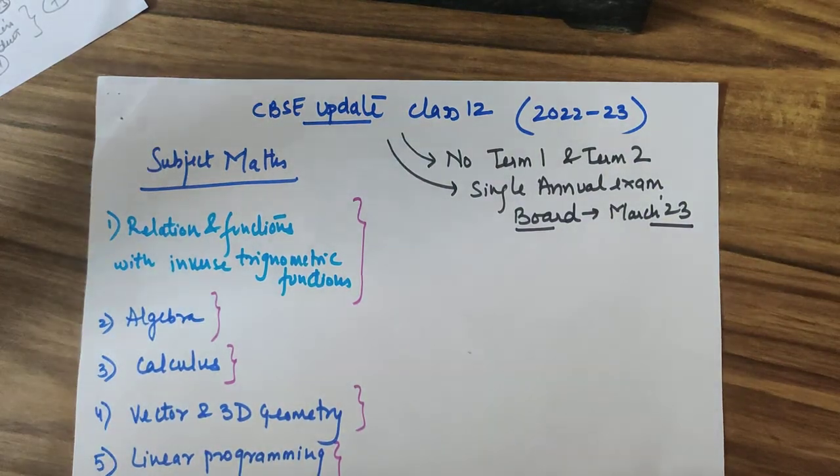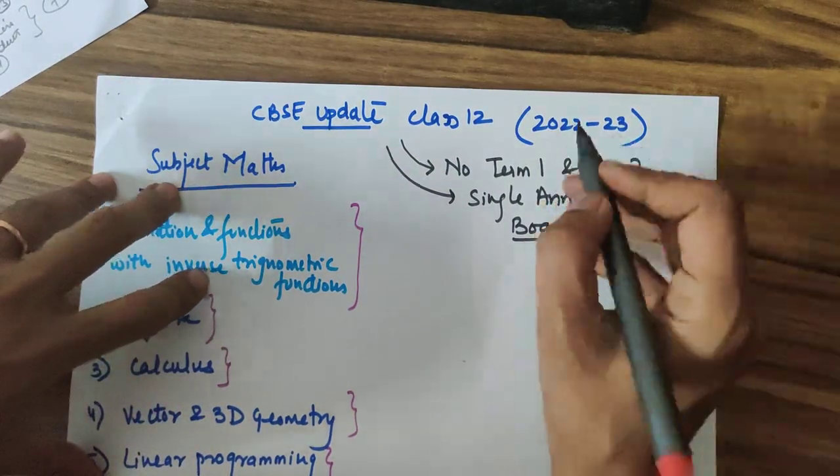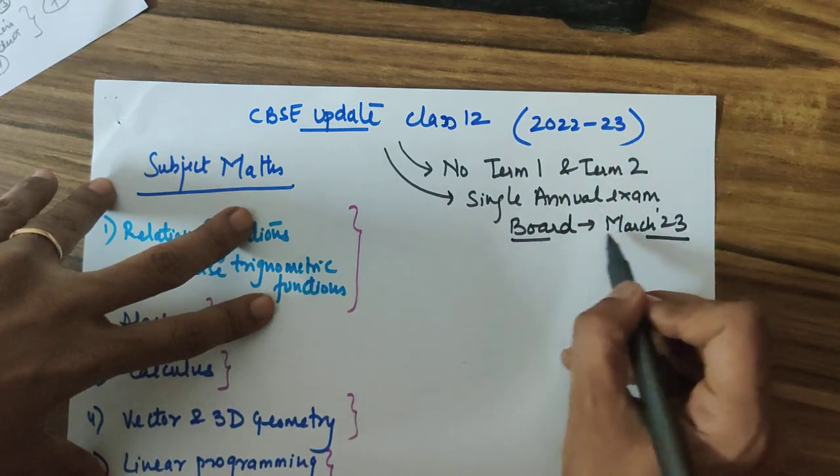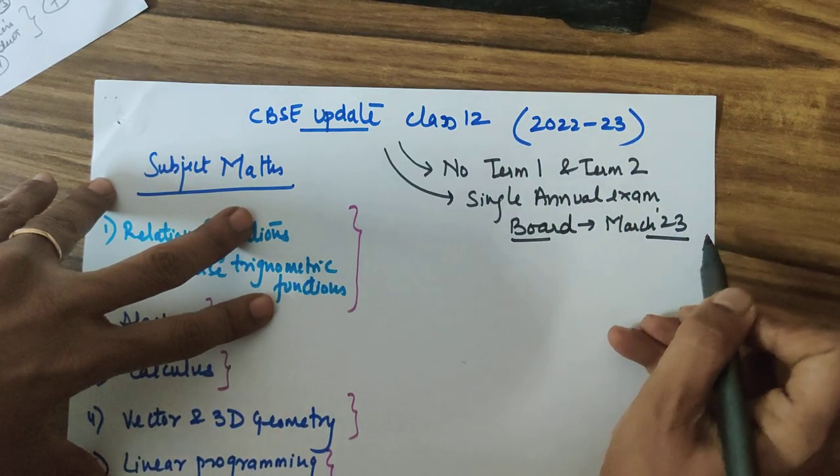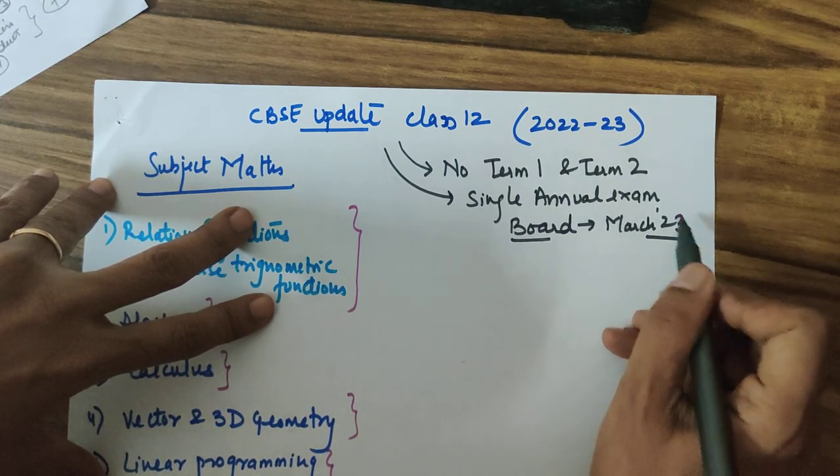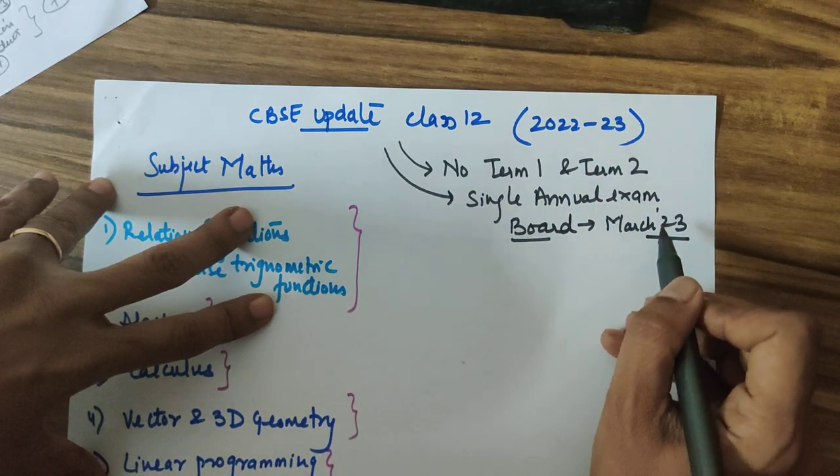A very good evening. Present class 12th, the batch of 2022-23, the ones who would be appearing for the boards in March 23. I am not talking to the people who are appearing for board this month end. It is about the batch of next year.